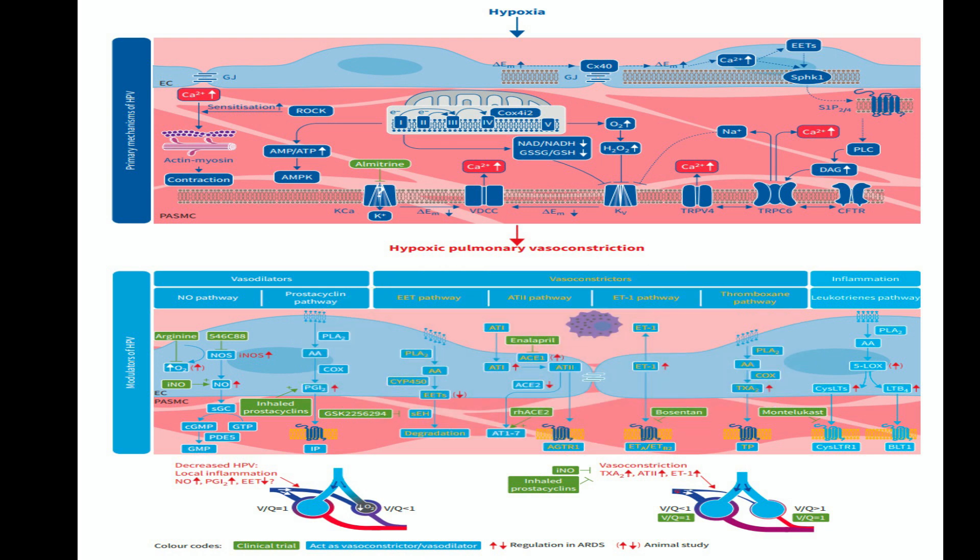In ARDS, leukotrienes mainly act by promoting inflammation. A high increase in nitric oxide and PGI2, and a decrease in EETs, may inhibit HPV and cause low V/Q areas in ARDS.